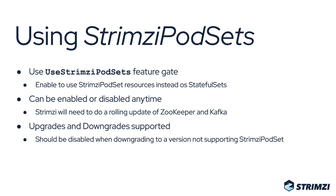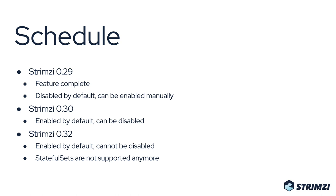Strimzi PodSets can also be enabled during upgrades and downgrades, but be careful — if you are downgrading to a version which does not support Strimzi PodSets, you always need to disable them first. In Strimzi 0.29, Strimzi PodSets should be feature complete and there are no known bugs, but they are still disabled by default and you have to enable them manually.